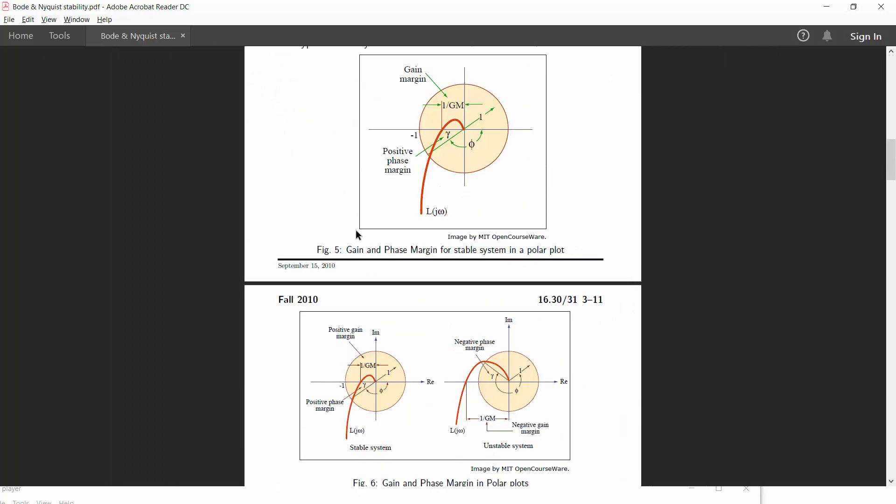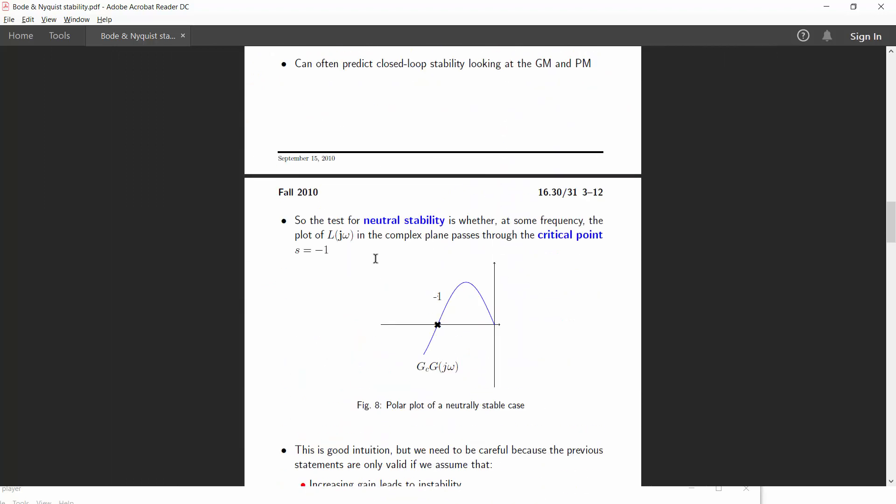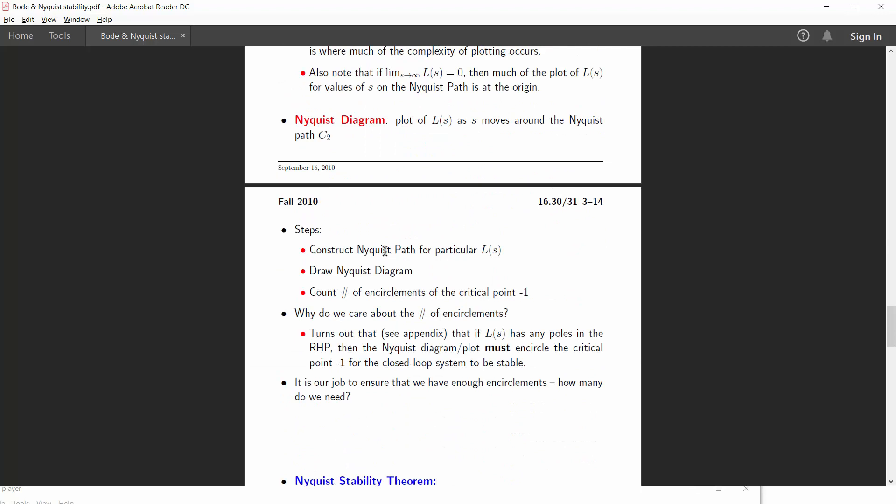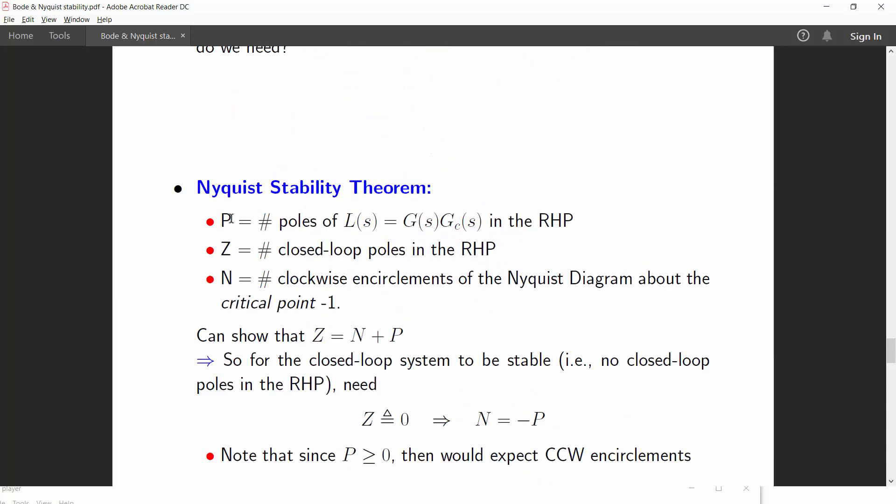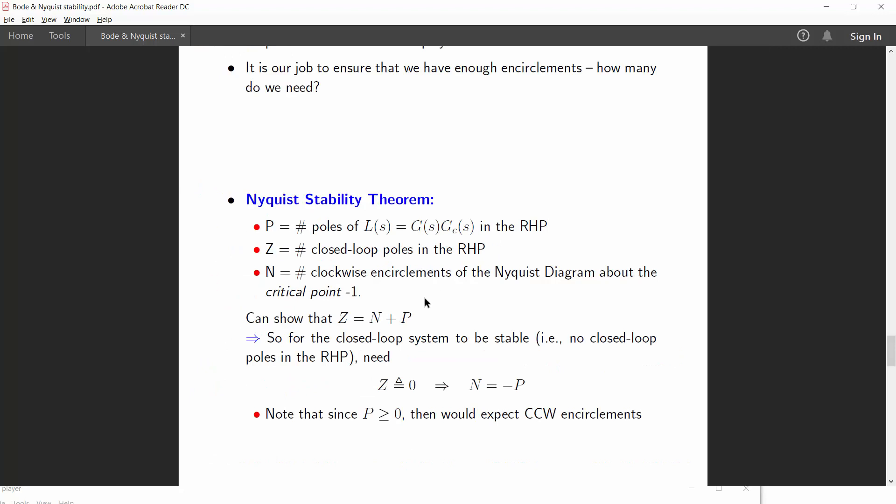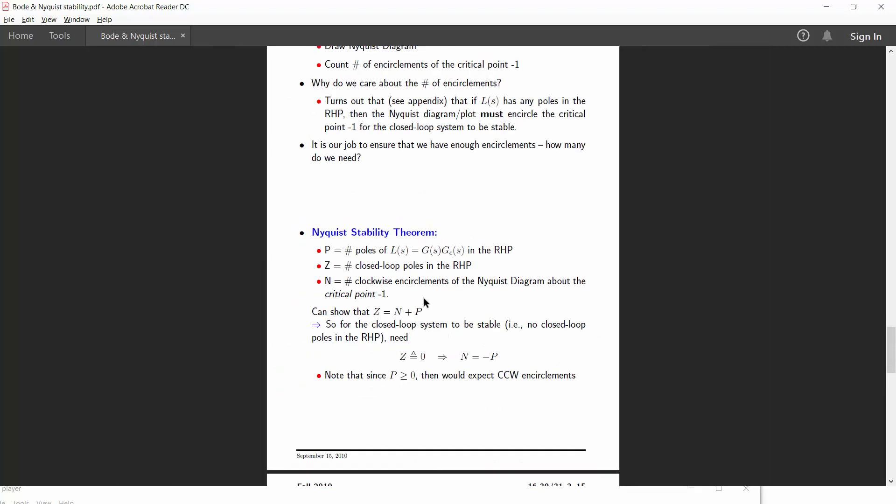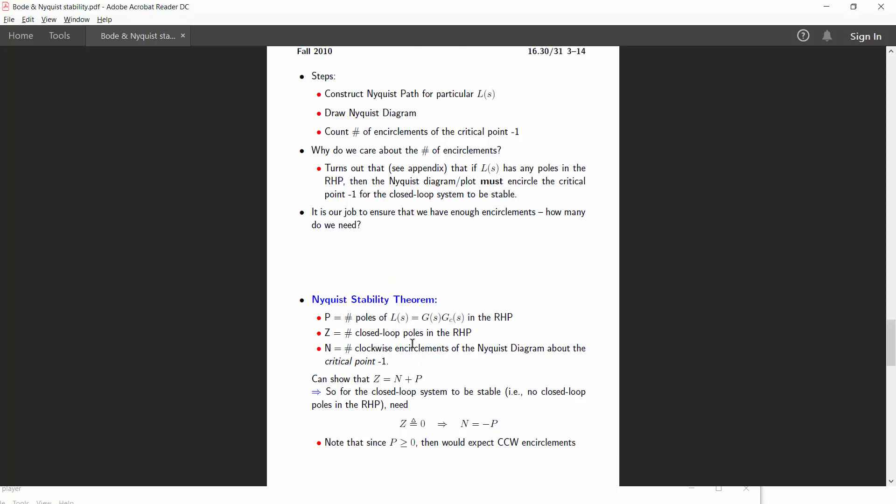Now if we assume that P is the number of poles of the system, for which the Nyquist plot was drawn, that is GHS on the right hand side of the plane, which means that the poles will be having the positive values of S and those poles will be lying on the right hand side of the Nyquist plane.